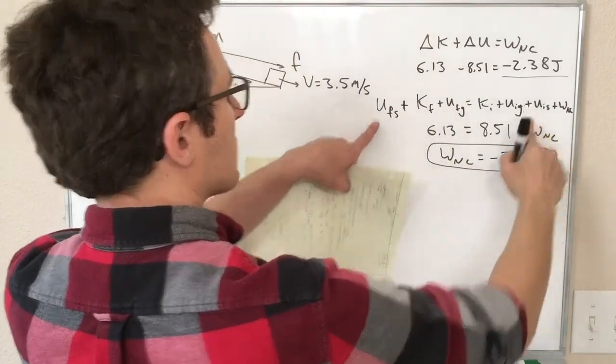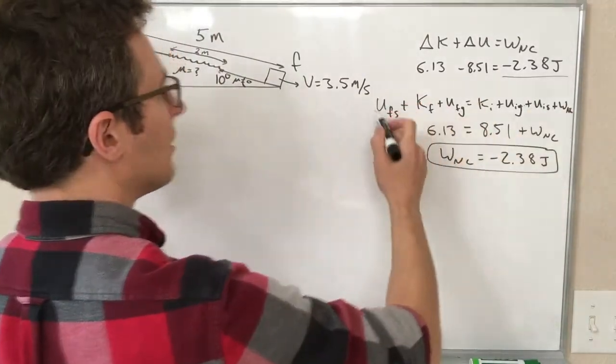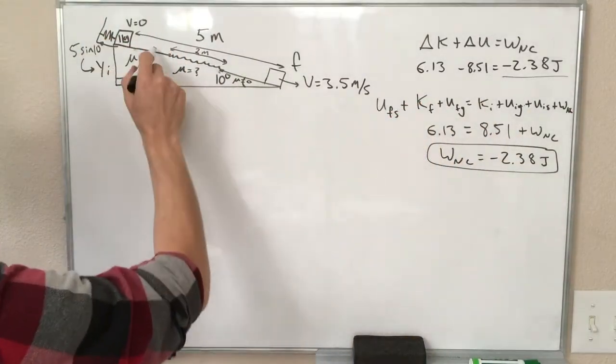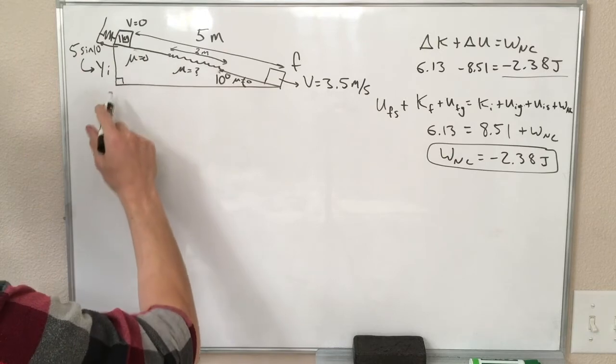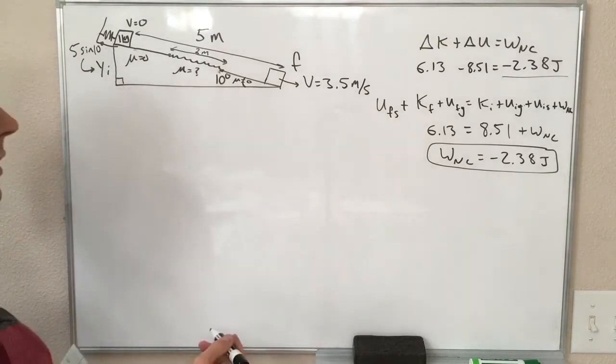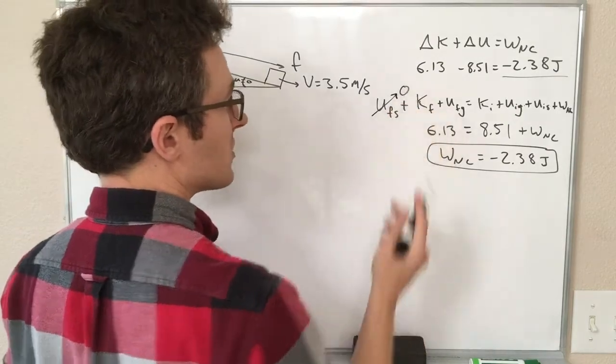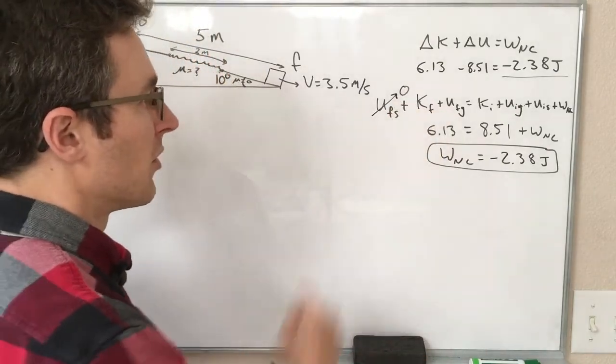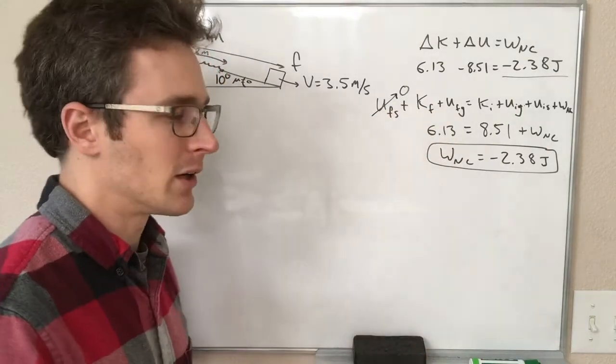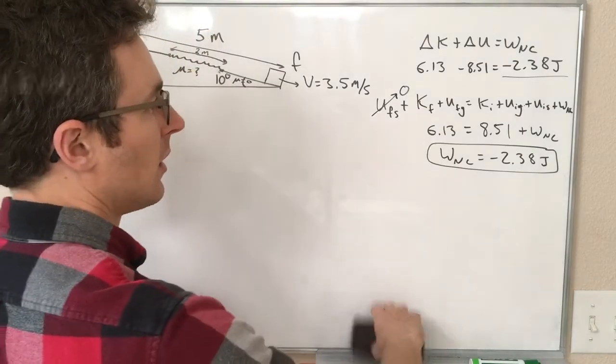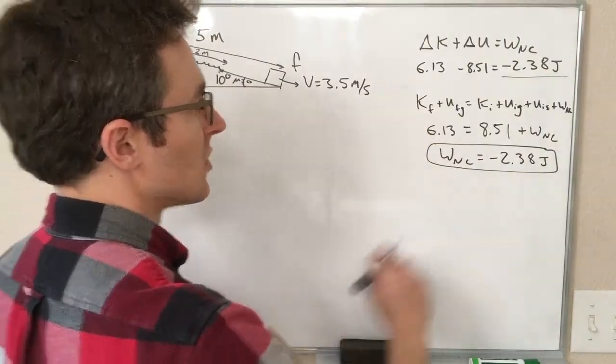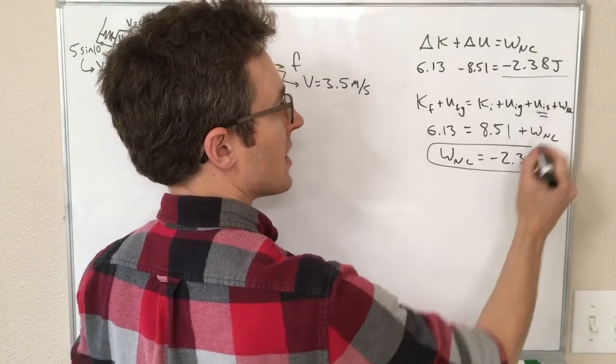And so, we're also going to add some spring potential energy to each side. So we just add one extra term to each side, which makes this look really long, except if the spring is done pushing on the block once the block leaves the spring, the energy stored in the spring is going to be zero. So this term is actually zero, and the final energy stored in the spring, right? It uses up all its energy pushing on the block. And so, really, all we're adding is one more term to the right side of this equation.